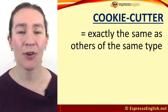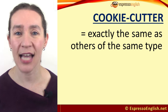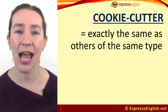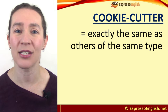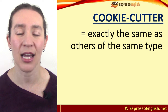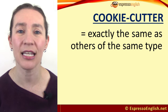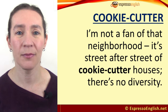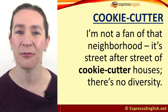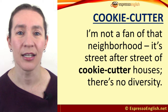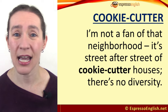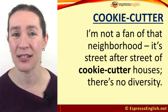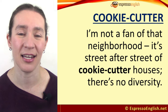'Cookie cutter.' Describing something with the adjective cookie cutter means it is exactly the same as others of the same type — there's nothing different about it. For example: I'm not a fan of that neighborhood. It's street after street of cookie cutter houses. There's no diversity.